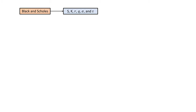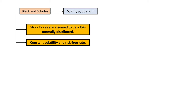Previously we utilized the Black-Scholes model to price European options. It considered factors such as the underlying price, strike price, risk-free rate, dividend yield, volatility, and time to maturity of the option while pricing it. Furthermore, assumptions such as stock prices being log-normally distributed, constant volatility, and constant risk-free rate were considered in the Black-Scholes model while pricing options.